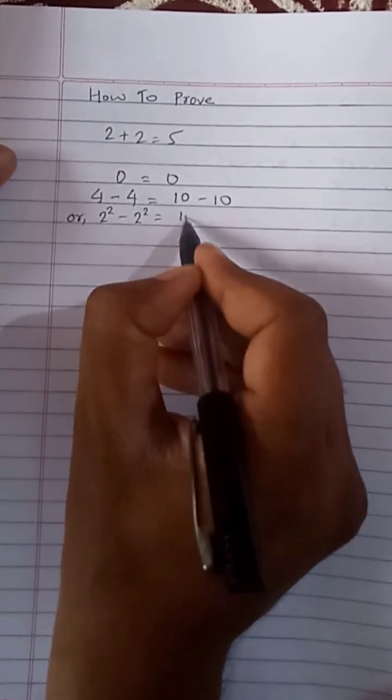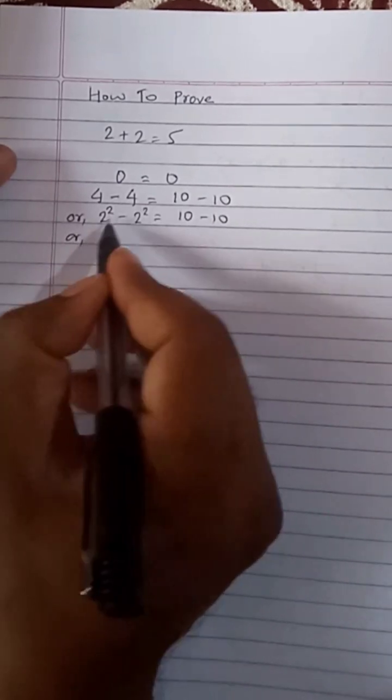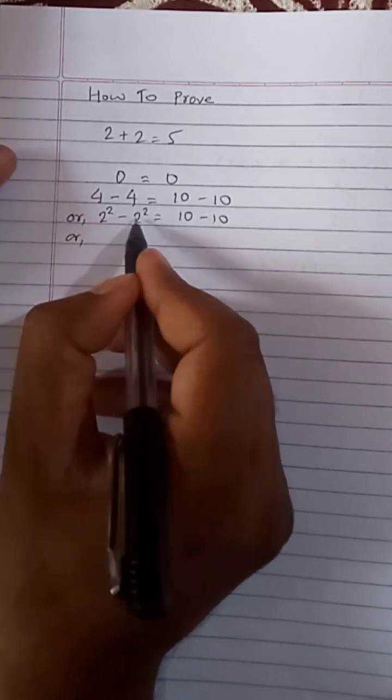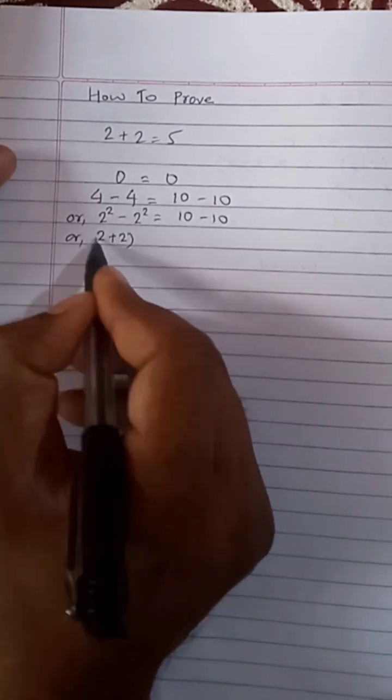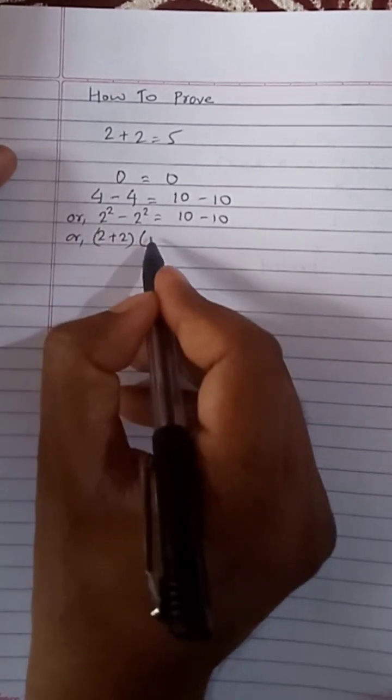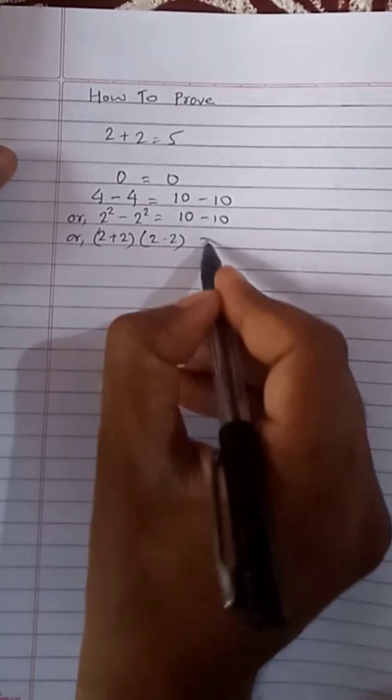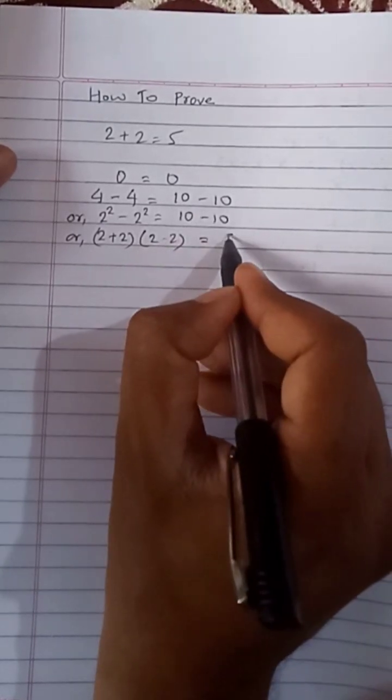And here 10 minus 10. Now we can use the formula of a squared minus b squared, whose formula is a plus b times a minus b, means (2 plus 2) times (2 minus 2). Here we can take 5 common, then here it will be 2 minus 2.